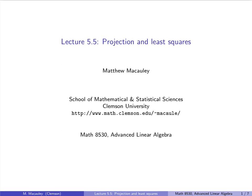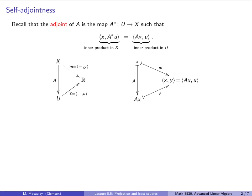Welcome to lecture 5.5, Projection and Least Squares. Recall from the previous lecture that the adjoint of a linear map A is a linear map A* that goes backwards from U to X with the property that the inner product of AX and U in big U is equal to the inner product of X and A*U in big X. So one way to think about this algebraically is that if you want to move the A to the other side of the inner product, you have to put a star in front of it.